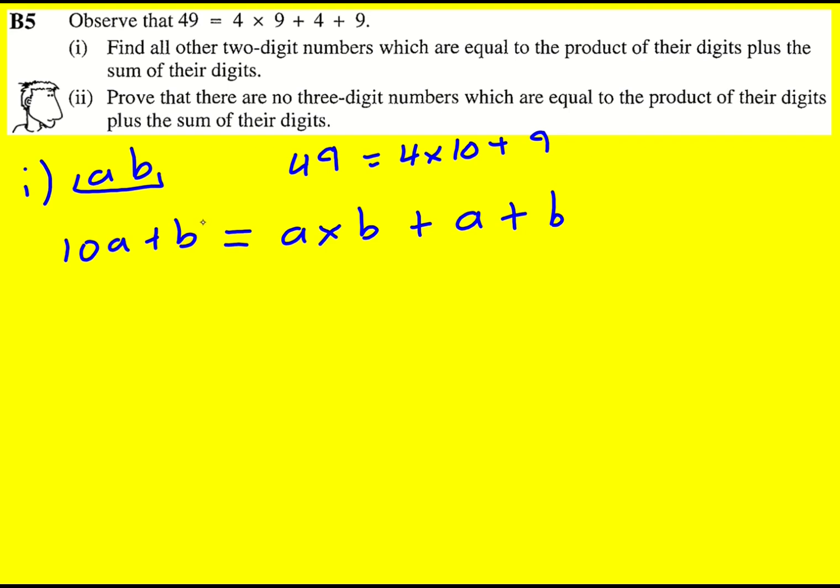We can immediately minus B from both sides, cancel that out and minus A from both sides. So 9A is equal to A times B. A is actually non-zero because I'm interested in two-digit numbers. So I can just ignore equaling zero and I can actually divide through by it to cancel it out, which means B must equal nine.